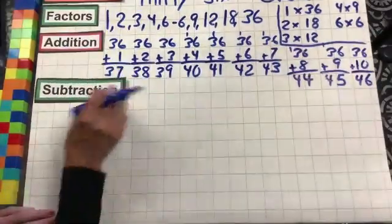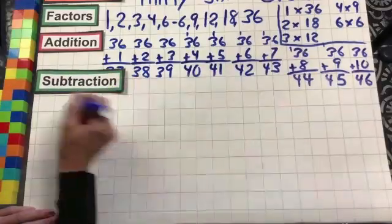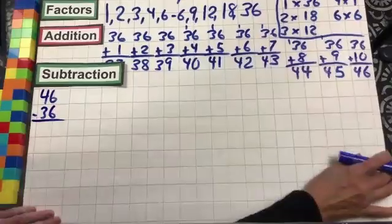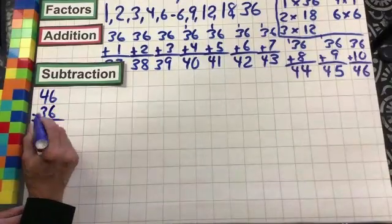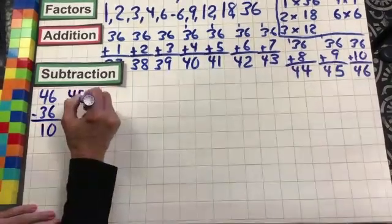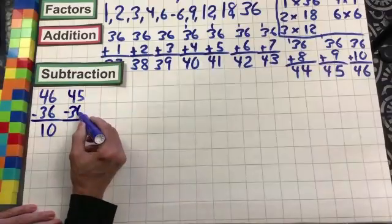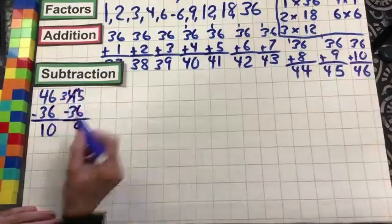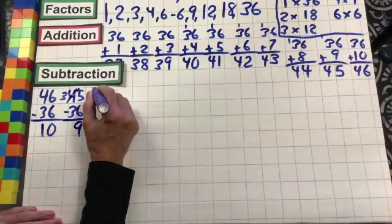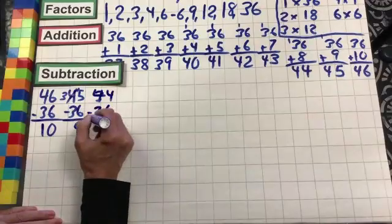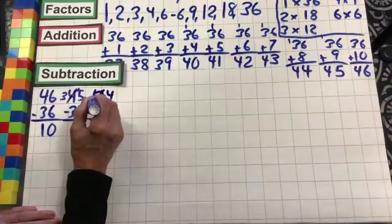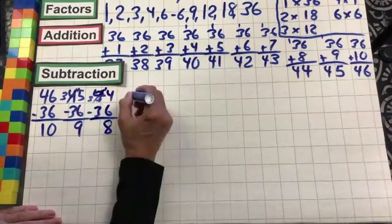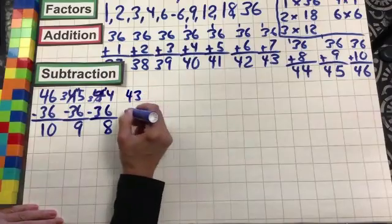Let's move on to subtraction. We're going to start with 46 minus 36: 6 minus 6 is 0, 4 minus 3 is 1. 45 minus 36: 5 minus 6 — can't do. Borrow from the 4, leaving 3, making that 15 minus 6 is 9. 3 minus 3, nothing. 44 minus 36: can't take 6 from 4, borrow from the 4, leaving 3 — 14 minus 6 is 8. 3 minus 3 is 0. Remembering our addition and subtraction facts.